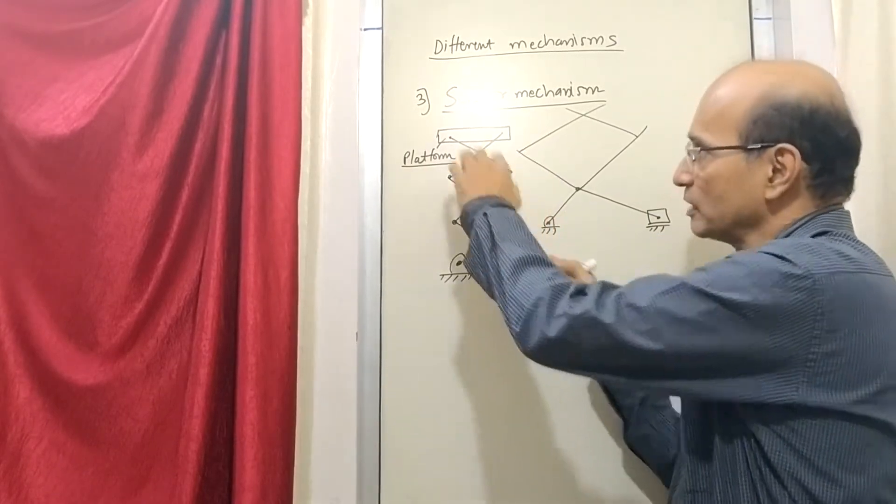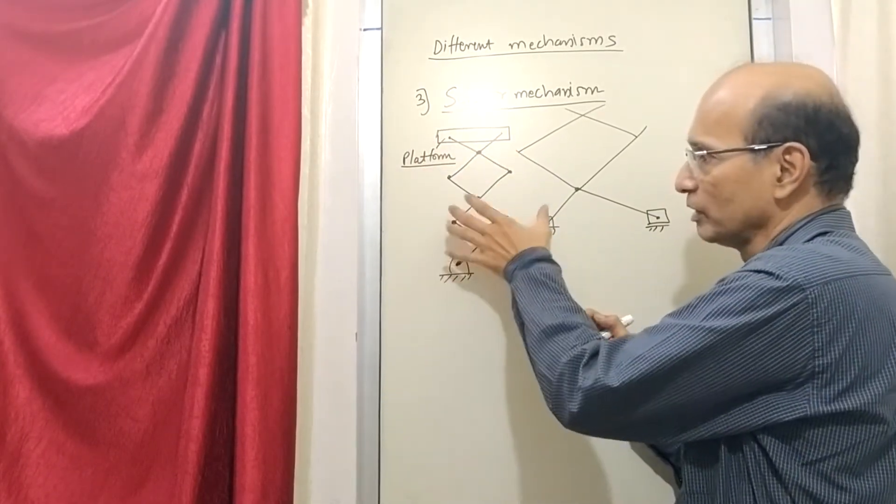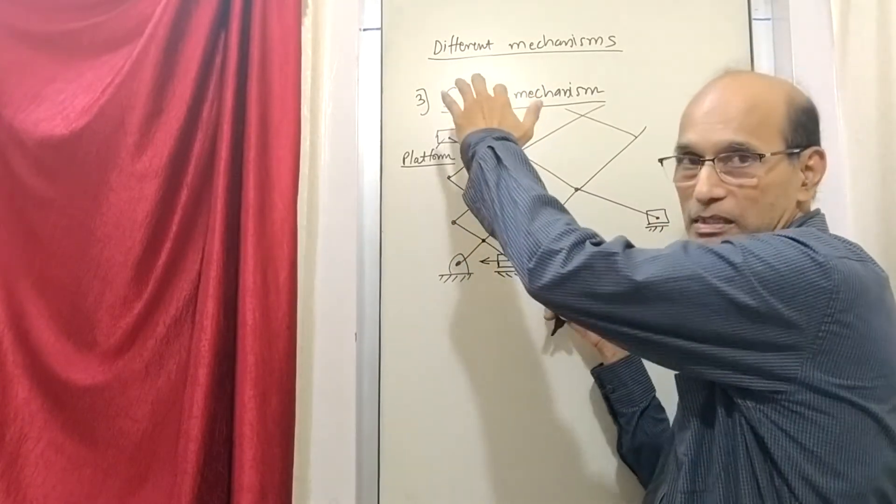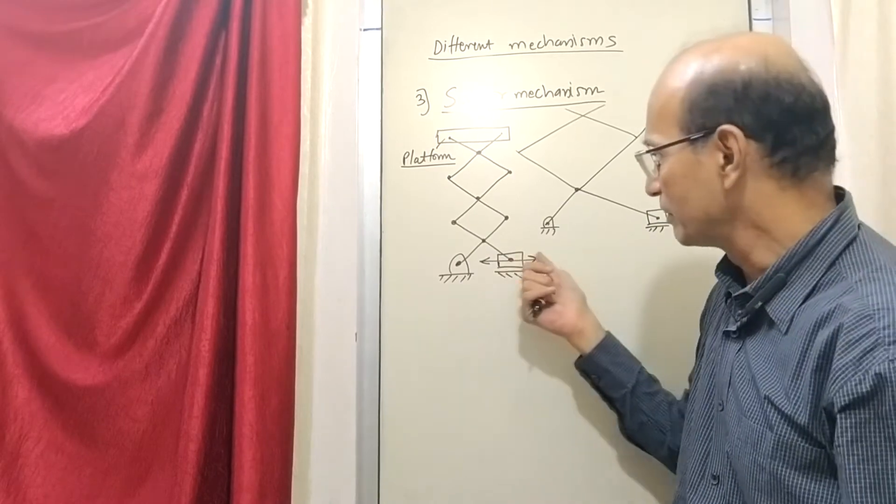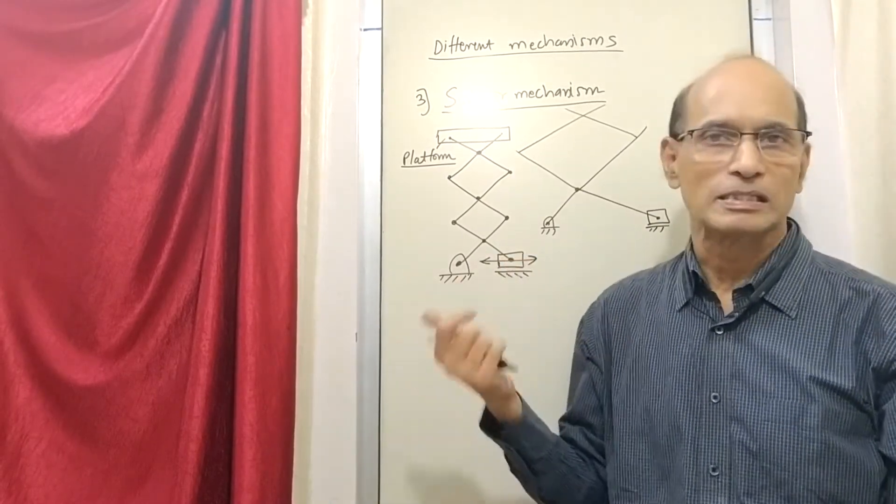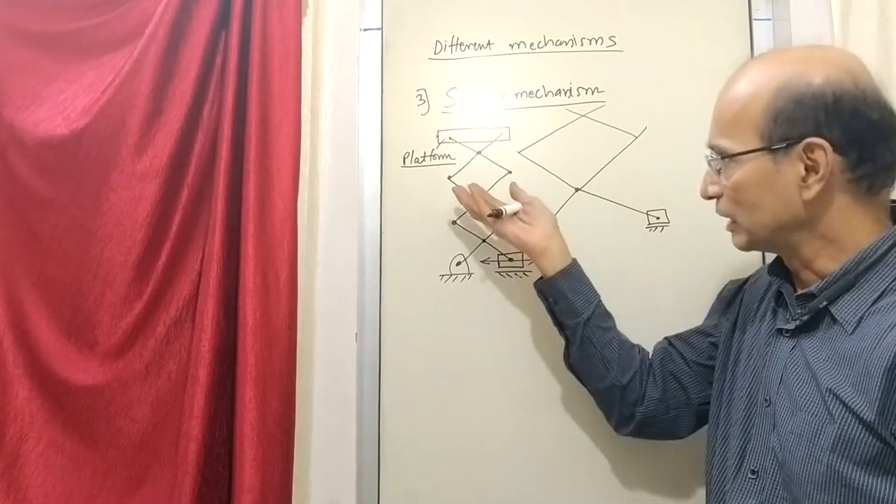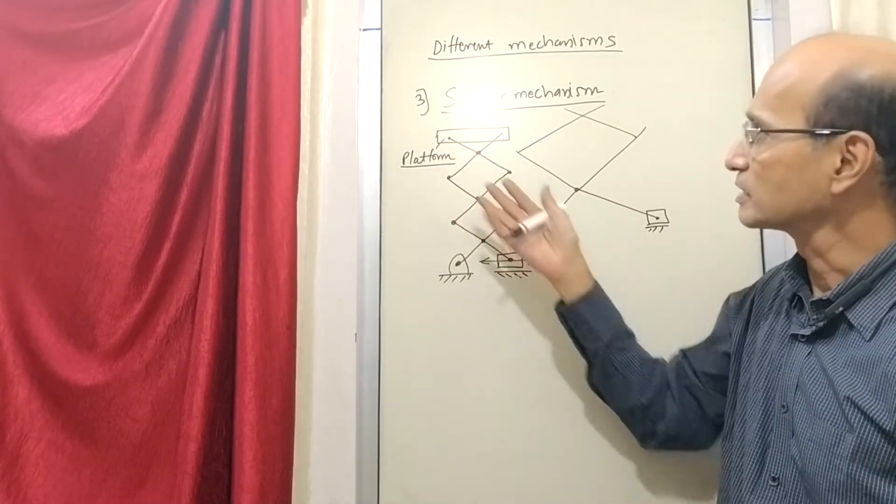When you move this slider out, then this whole thing will collapse and this platform will come down. And the load is at a lower level. When you move this piston forward, the platform will raise up. This action can be carried out by some kind of a hydraulic cylinder or whatever is the actuating mechanism. That can be fitted here so that the platform gets lifted.